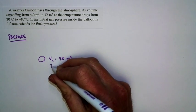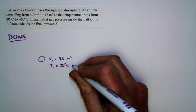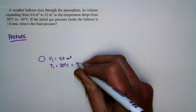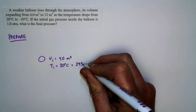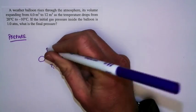The initial temperature is 20 degrees Celsius, but of course we're going to need that in Kelvin. So we're going to turn that into 293 Kelvin. And then it rises into the atmosphere.